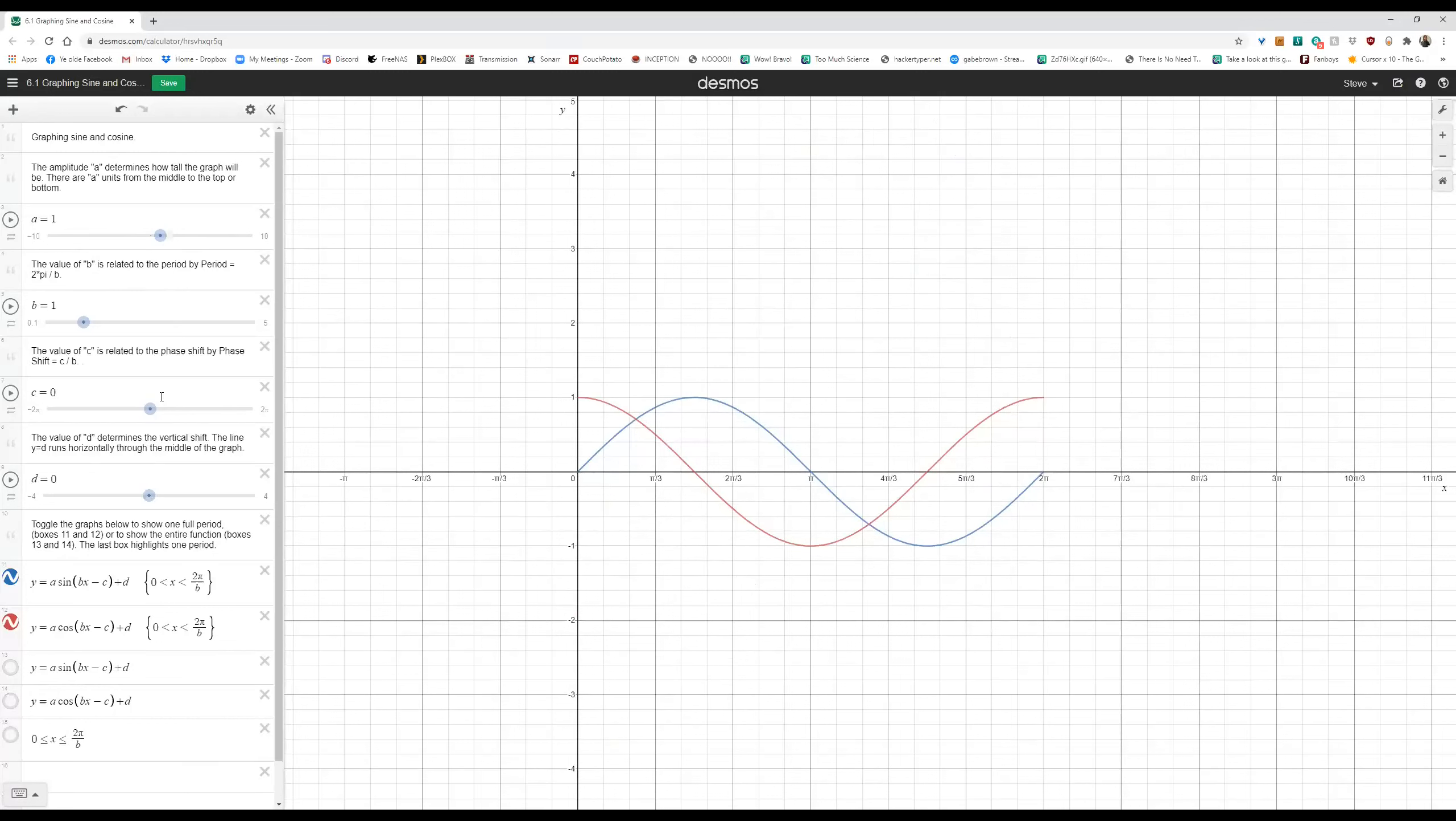Now if I change that value of b, changing b is going to change the period. So as I increase b, I'm actually going to be shrinking the graph horizontally, I'll bring it in tighter.